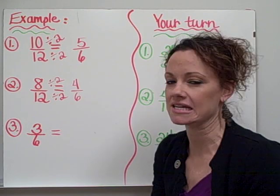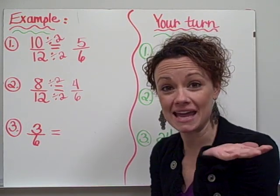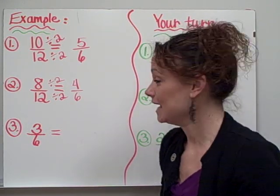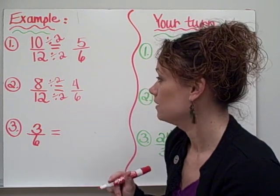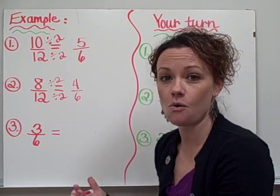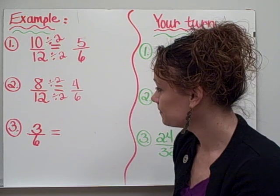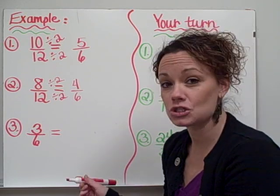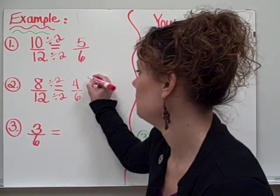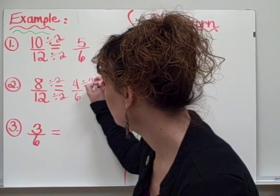Alright, so now I'm at 4 sixths and I ask myself that question again. How low can you go? Can I go any lower? Is there any other number besides 1 that goes into 4 and 6? And that answer is yes. 2 actually goes into both of them as well. So I'm going to divide again.